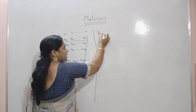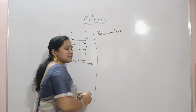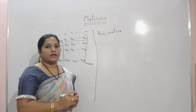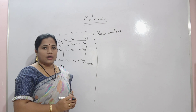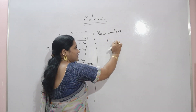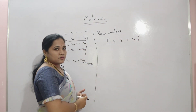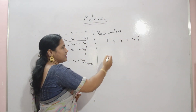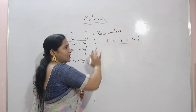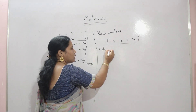What is a row matrix? In a matrix, if only one row is present, then that matrix is called a row matrix. For example, [1, 2, 3, 4] — if you observe this matrix, here only one row is present, so this is called a row matrix.